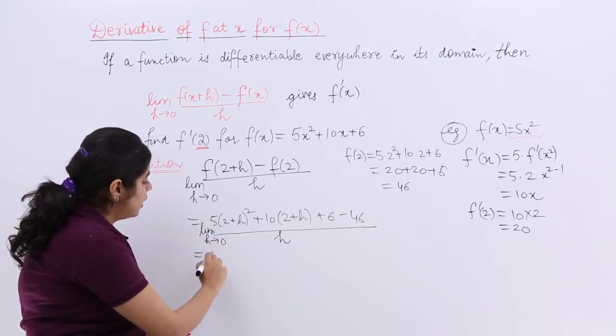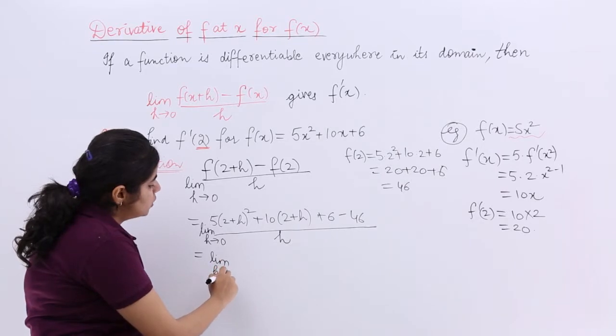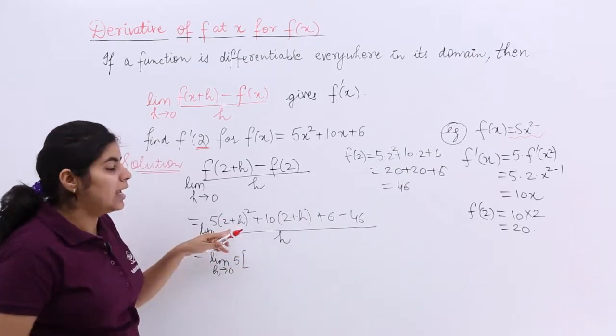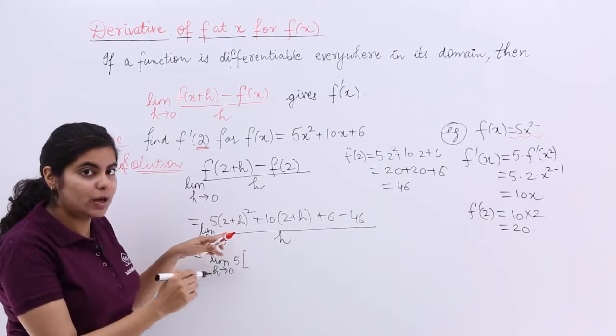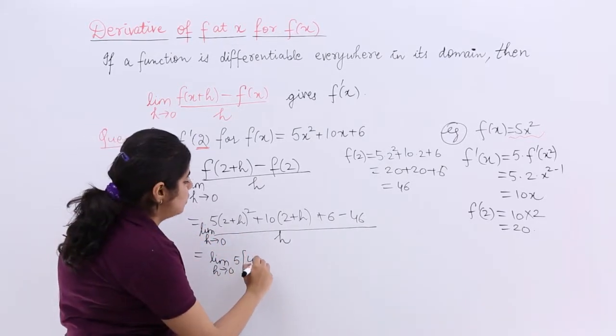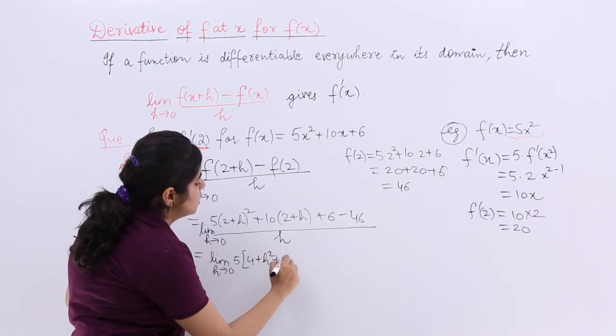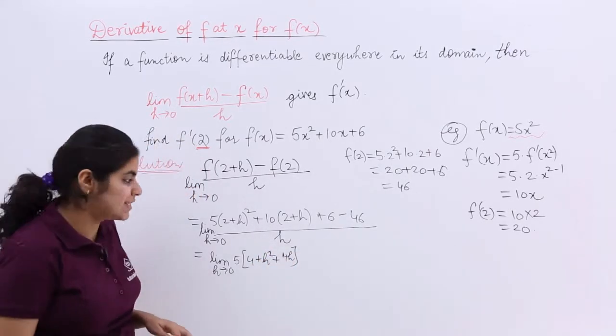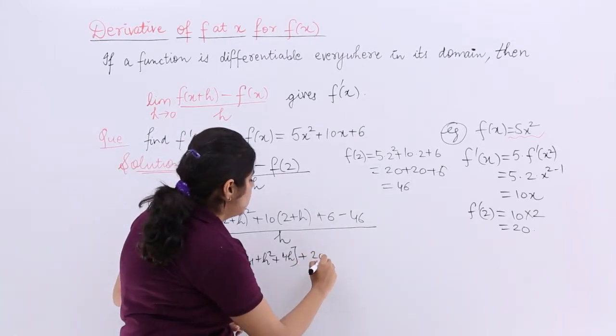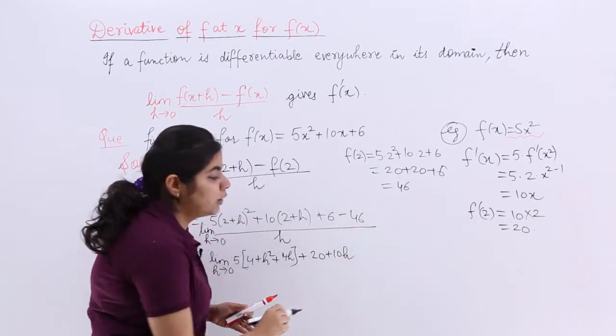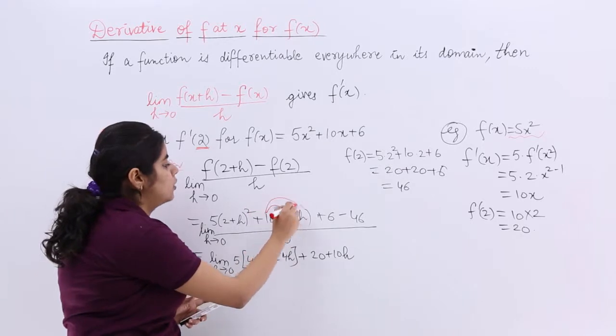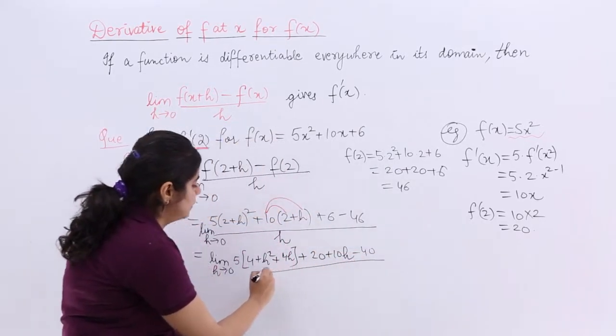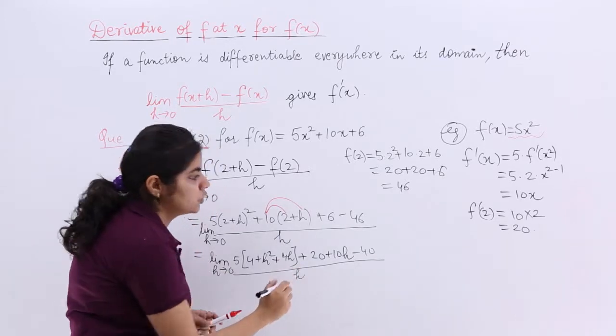Now what to do? Again limit h tends to 0, 5 is there. Expand a plus b whole square: a square plus b square plus 2ab. 2 times 2 is 4h. I hope this makes sense plus 20 plus 10h. What I am doing is multiplying here, multiplying here, minus 46 upon h.